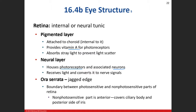There's a structure called the ora serrata — it has a jagged, serrated edge. It acts as a boundary between photosensitive areas and non-photosensitive areas of the eye. The non-photosensitive areas are mostly in the front portion of the eyeball, which makes sense because light enters and hits the back of the eyeball — that's where you want your photoreceptors.